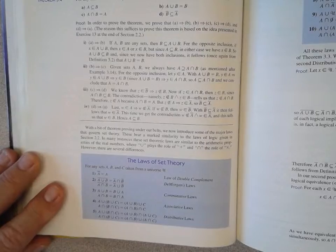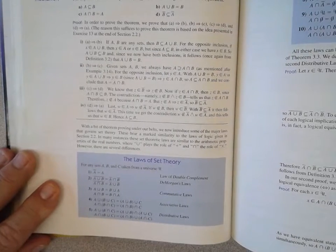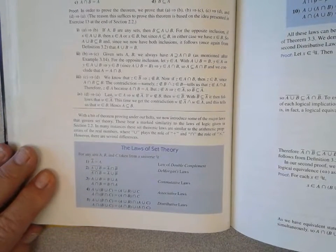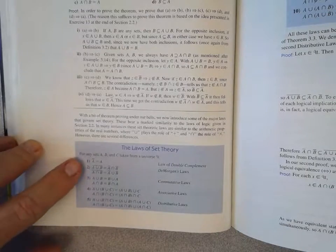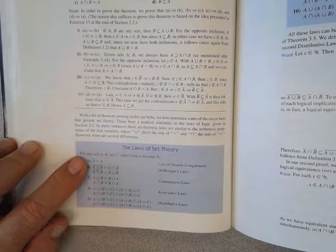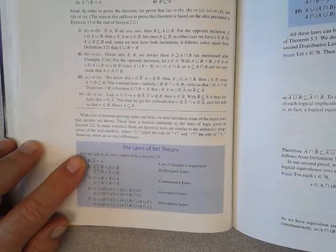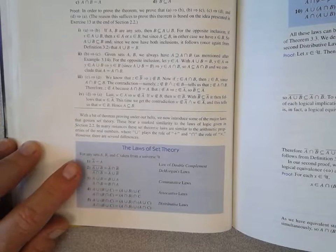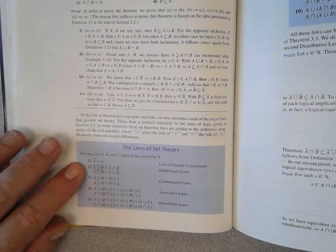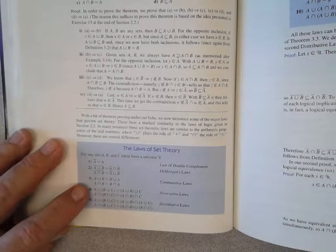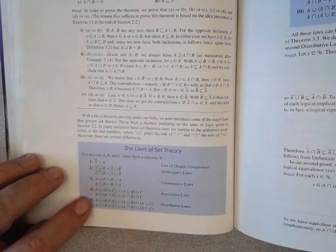And I hope that when you look at this, you'll see some things that seem familiar. Number one here, the Law of the Double Complement. Hopefully, when you think of double complement, you think of the double negative. And then you see DeMorgan, commutative, associative, distributive.